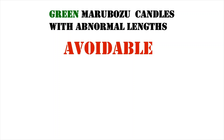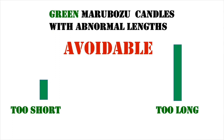Next, let's look at green Marubozu candles with abnormal lengths. If the green Marubozu candle is too short, it indicates there is not much buyer's value, so we avoid the trade because the upside movement may or may not happen. When the green Marubozu candle is too long, we also don't place any trade because placing a stop loss becomes a problem, which we will discuss at the end of this video.